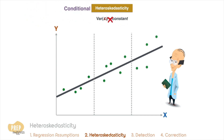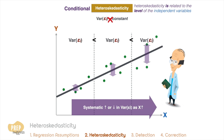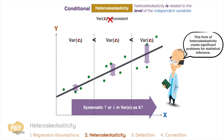Conditional heteroscedasticity is heteroscedasticity that's related to the level of the independent variables. For example, conditional heteroscedasticity exists if the variance of the residual term increases as the value of the independent variable increases, as shown. Conditional heteroscedasticity does create significant problems for statistical inference.